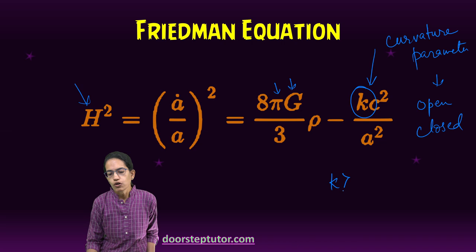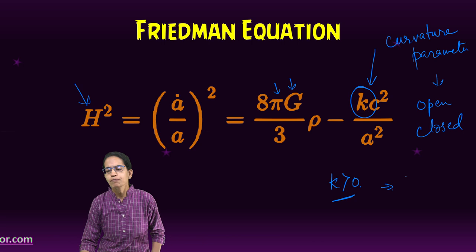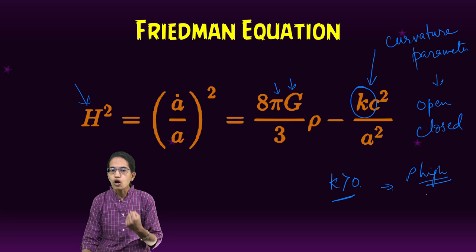it signifies that the density is high enough and as a result, gravitational attraction would stop the expansion leading to contraction or what is called as a big crunch.